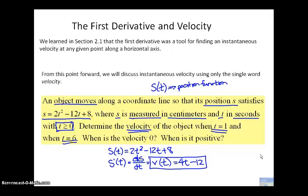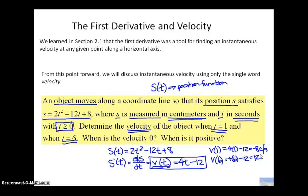It says find the velocity when T = 1 and when T = 6. V(1) = 4(1) − 12 = negative 8. V(6) = 4(6) − 12 = 24 − 12 = positive 12. Now, if they give me units, I need to attach units to the derivative function. So this is negative 8 centimeters per second, and this is positive 12 centimeters per second.